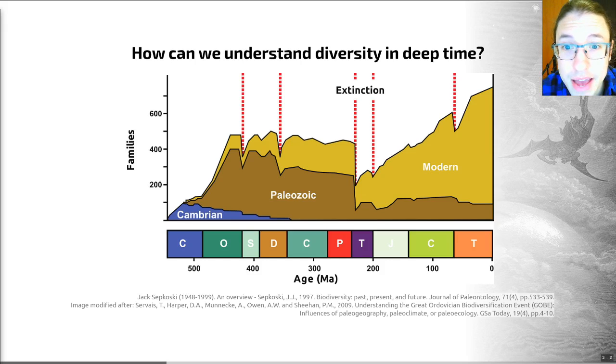A key name in all of this is Jack Sapkowski. He is a man that created graphs that show global history of diversity through successive intervals of geological time. For example, you count the number of families that may be present in each time period in the fossil record.